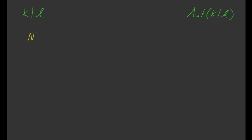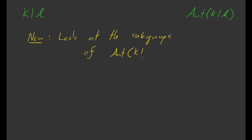What we want to do in this video is to look at the subgroups of this group Aut(K/k). That's a natural enough thing to do — we had some field extension, we associated a group to it, and now we want to look at subgroups of that group. In particular, we'd like to take some subgroup and pull a field out of it — find some way of taking a subgroup of Aut(K/k) and producing some field that depends upon that subgroup.